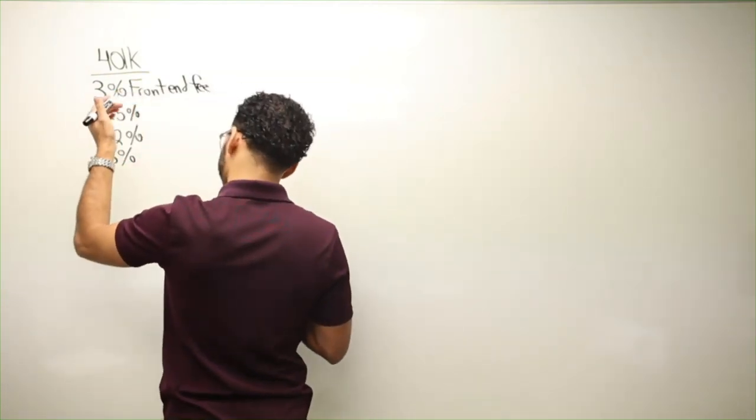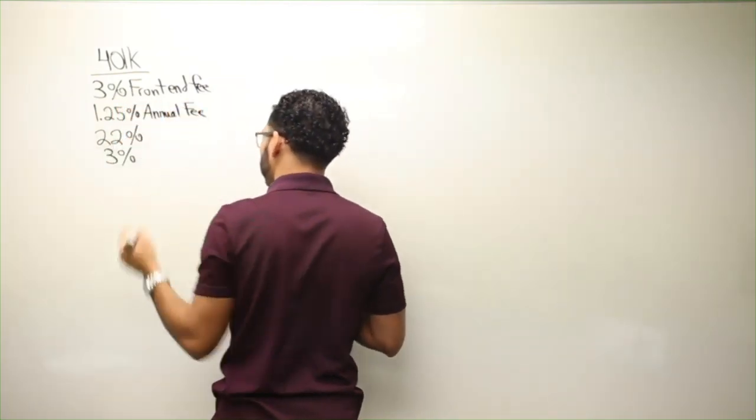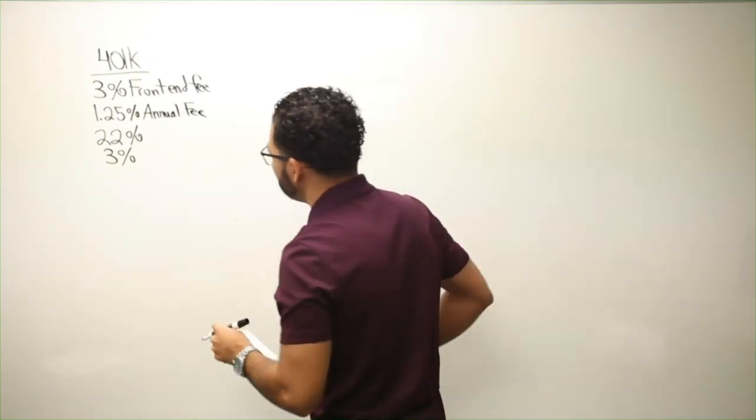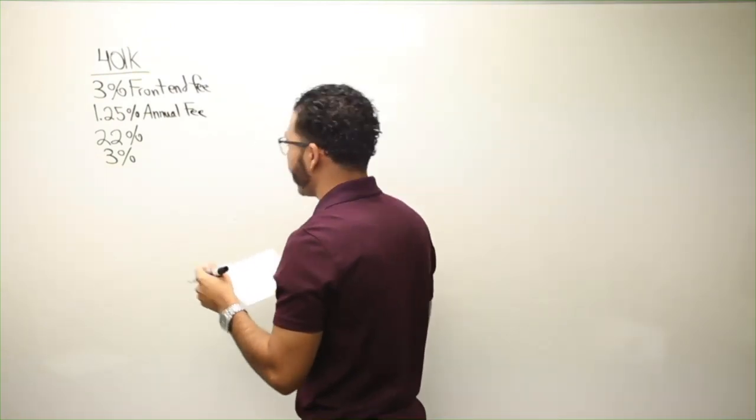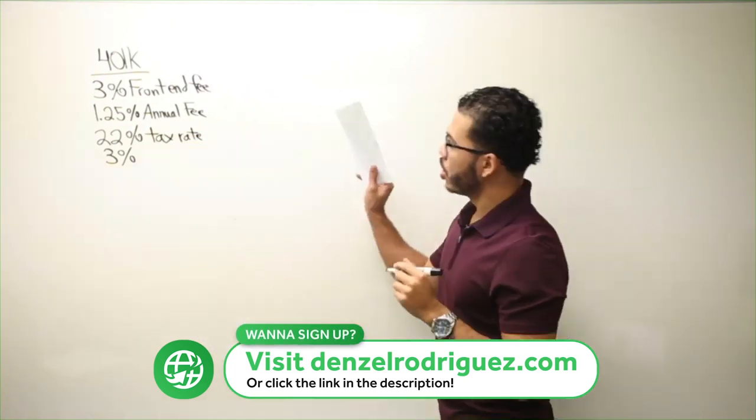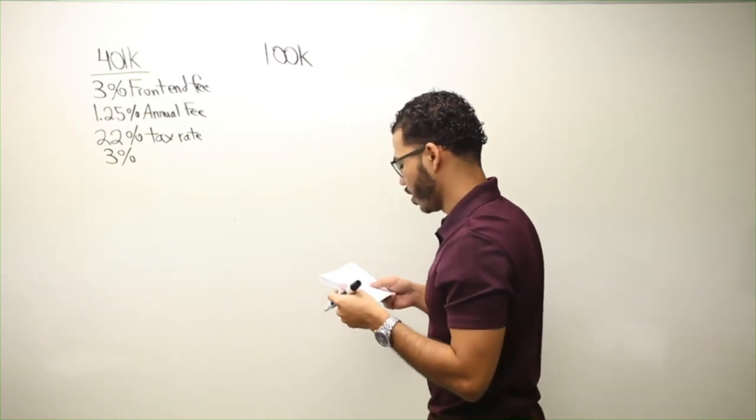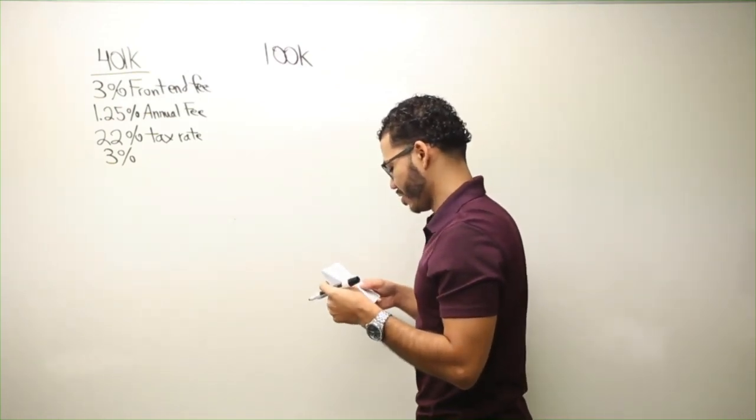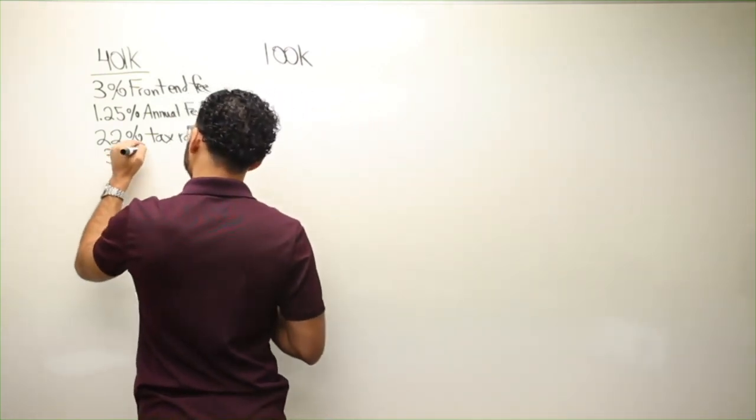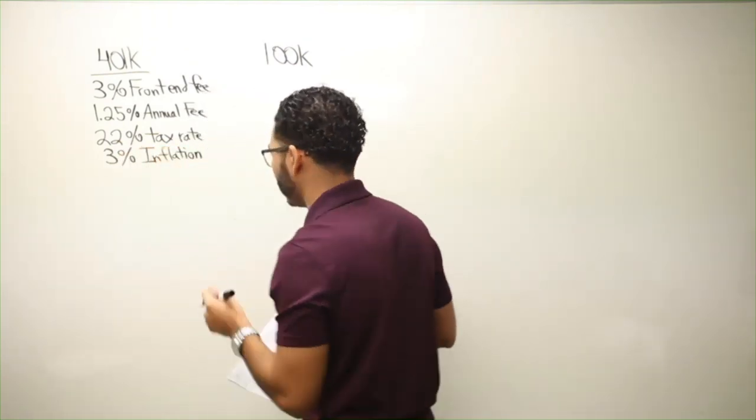3%, I would say on average. Then you've got the annual fee, which is something that you pay on the entirety of the account. So he put 1.25%. And then you have the tax rate of the individual, 22%. These numbers are based off someone making $100,000 a year. And they're contributing, I think it was like $19,000, like max funding the 401k. And then this 3% is inflation. I know some will say inflation is 2%, but that's irrelevant. The number can change.